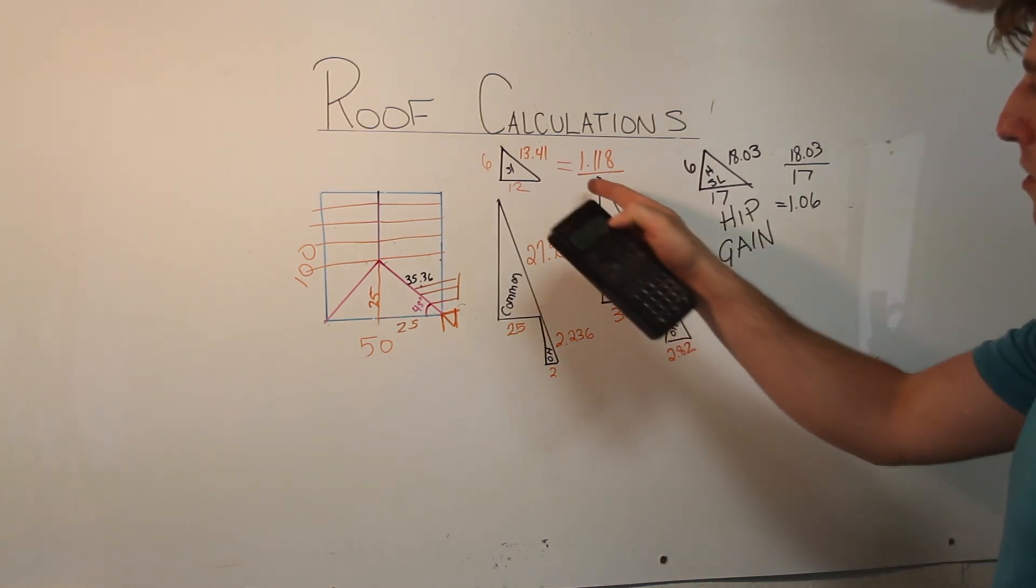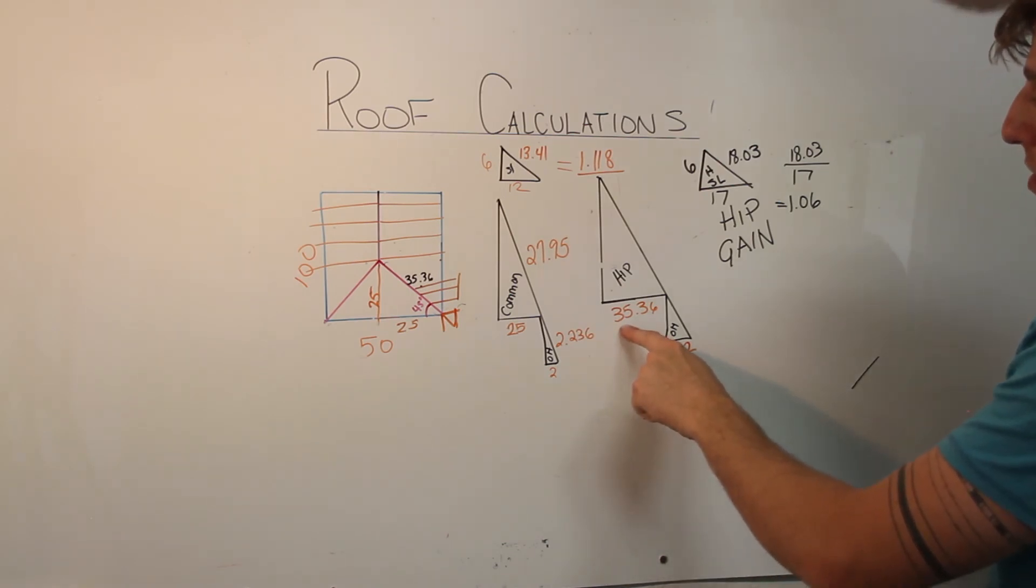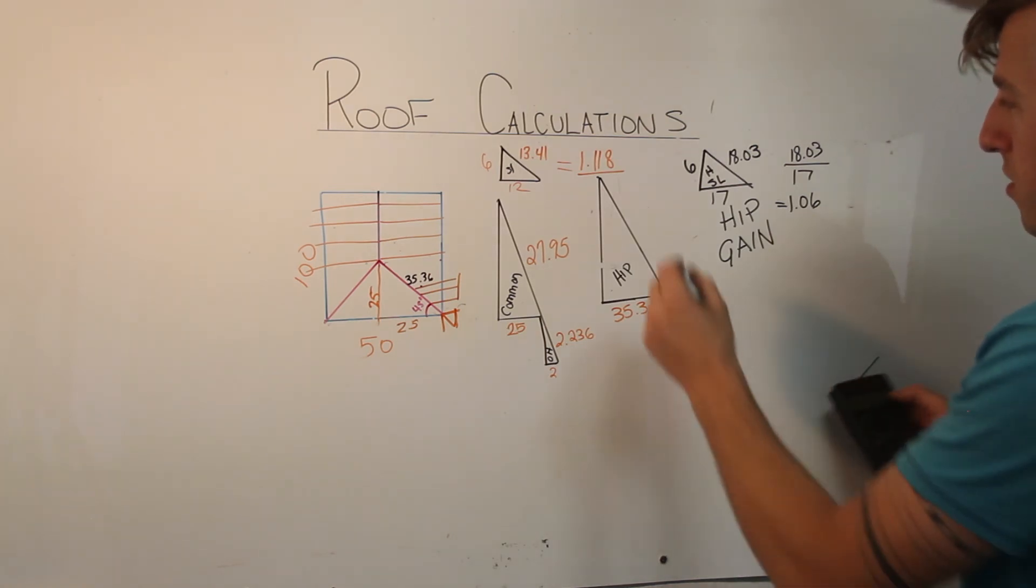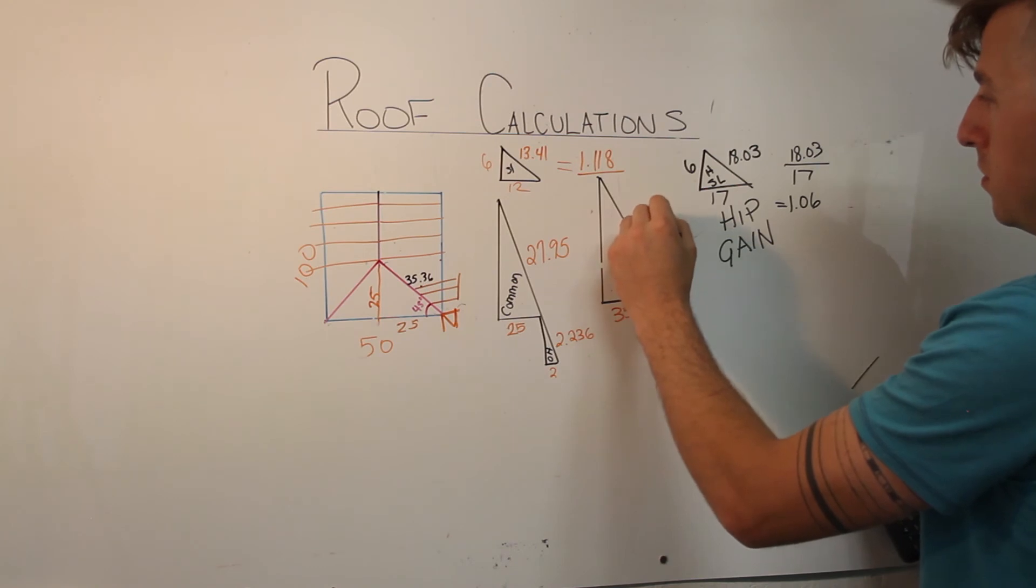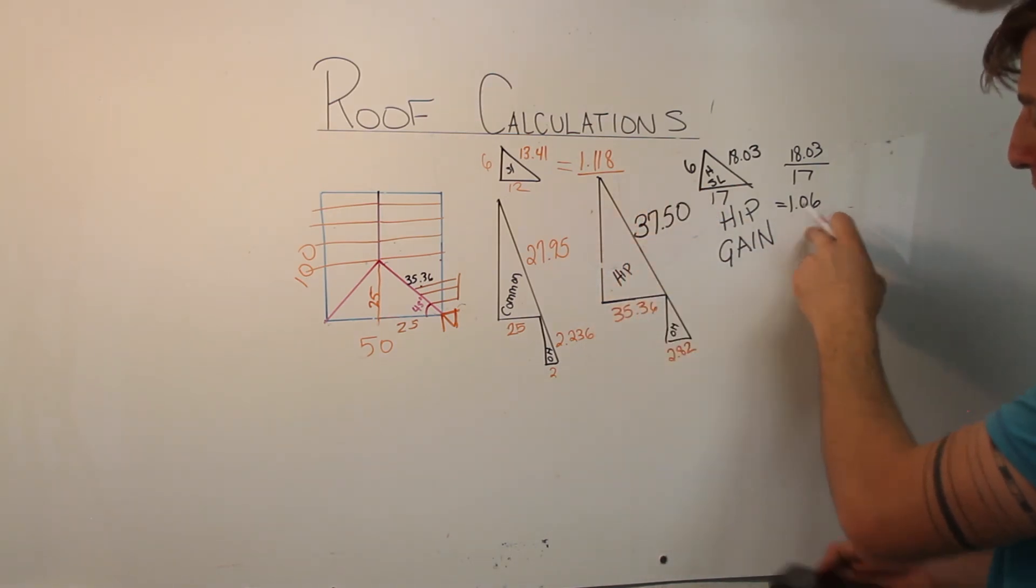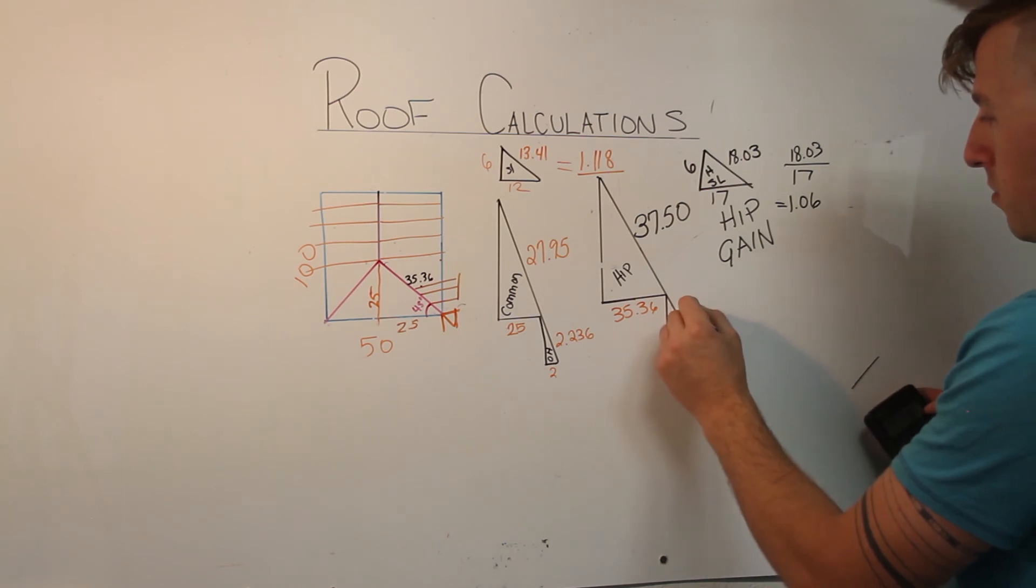What is this number? It's the hip gain. The hip gain works exactly the same as the slope gain. 35.36 times 1.06 is 37.50. 2.82 times 1.06 is 2.989. We'll say 3.